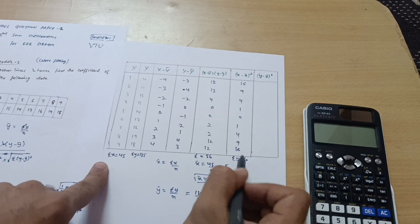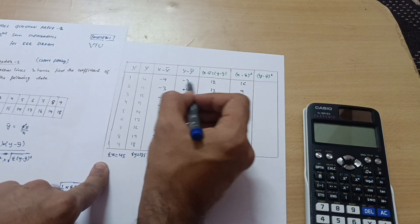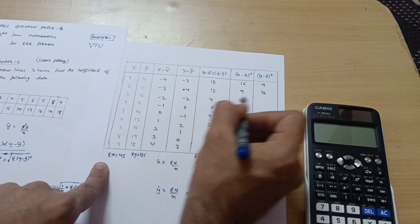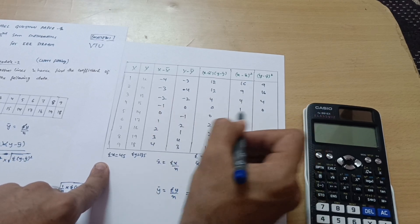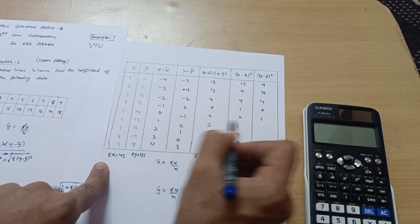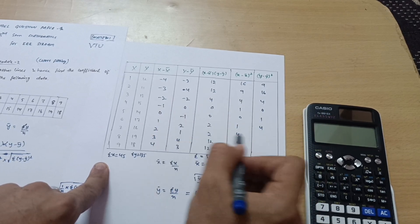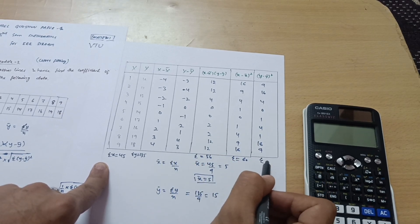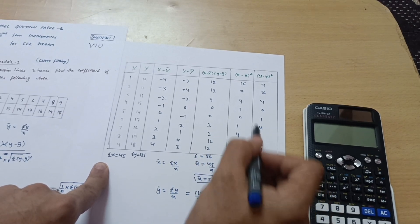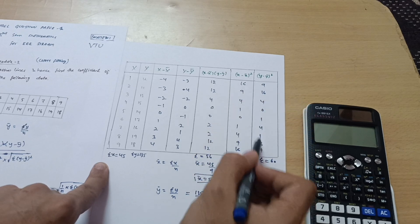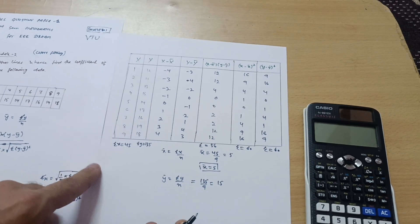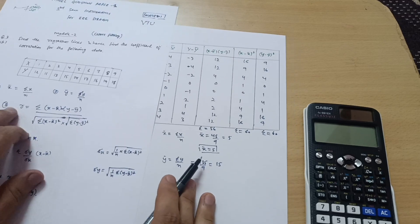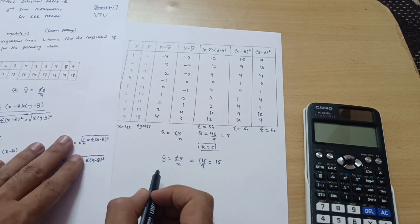For Σ(y − ȳ)²: squaring −3, −4, −2, 0, −1, 2, 1, 4, 3 gives 9, 16, 4, 0, 1, 4, 1, 16, 9. Adding these terms, the summation is also equal to 60.